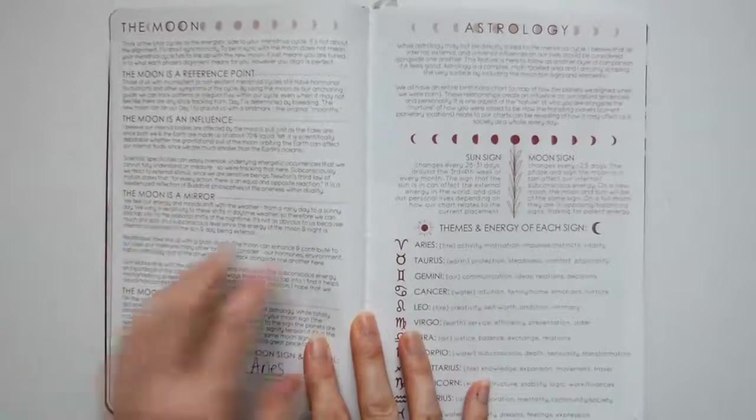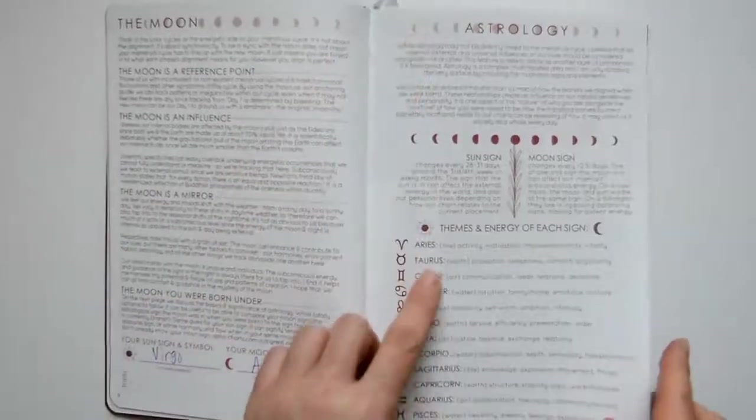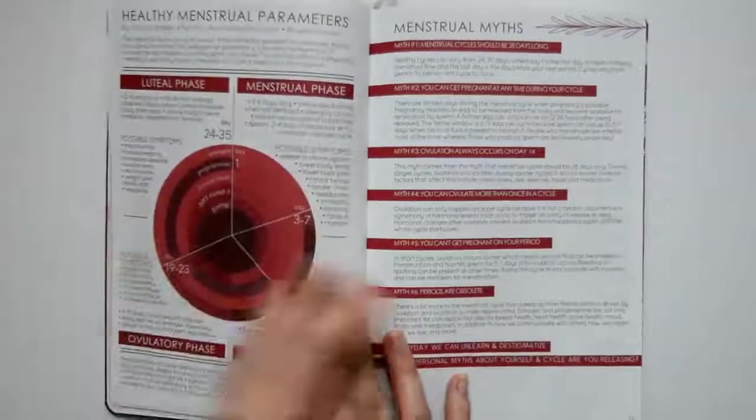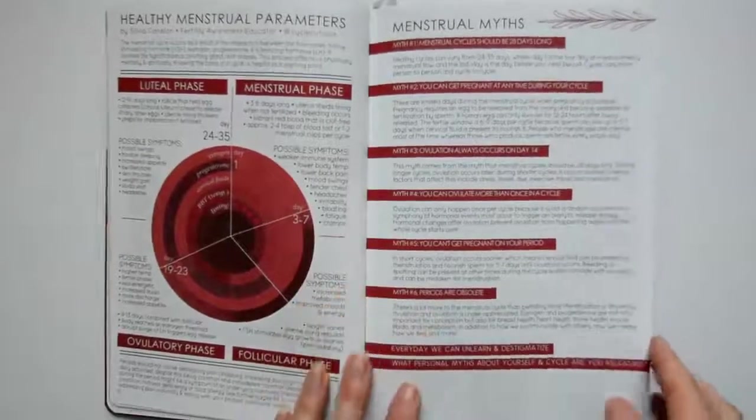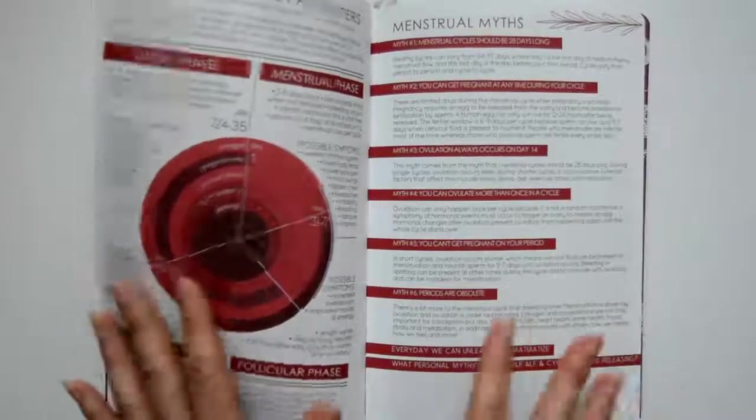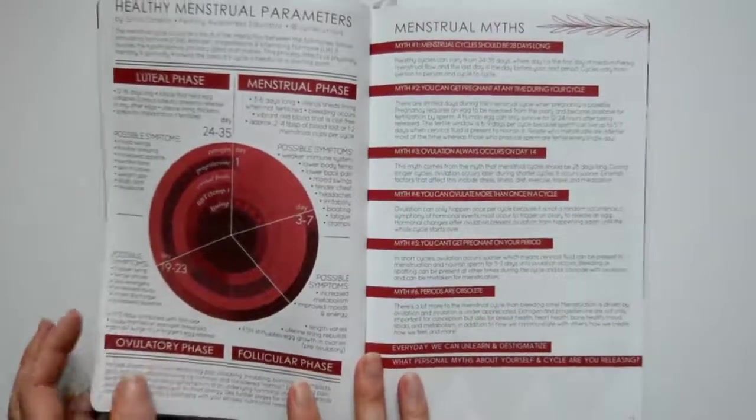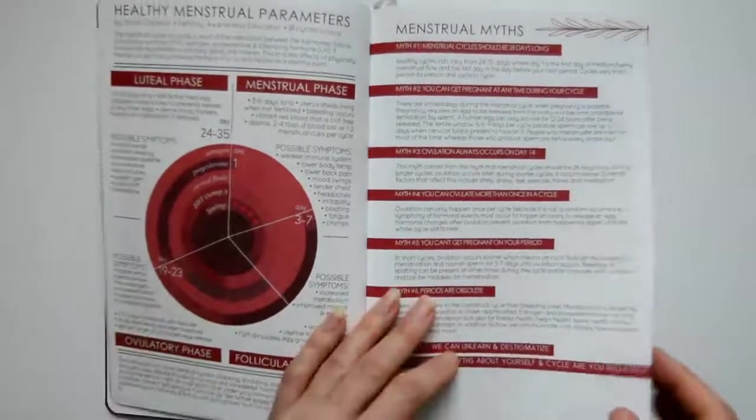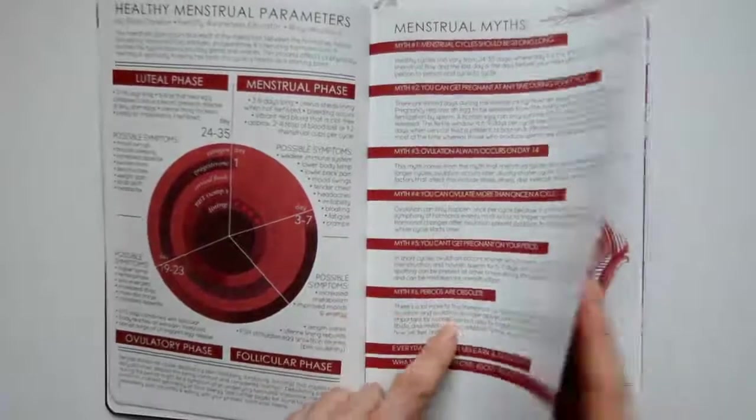Here's all about the moon, astrology, themes and energy of each sign, the uterus. If you're a young woman and you don't know much about your period, get this journal. This is worth more than anything I learned in school. There are so many myths and they go over them here.